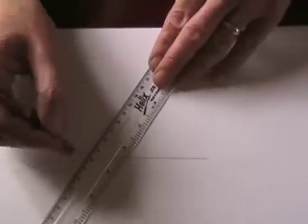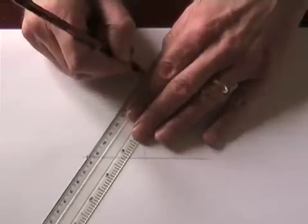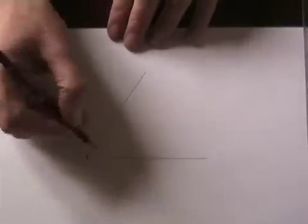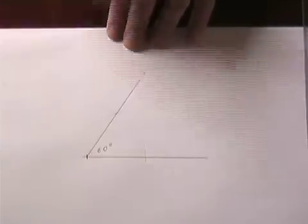And the whole thing was 360 degrees, so just one will be 60 degrees. So I have created an angle, 1/6th of a circle which will be 60 degrees.